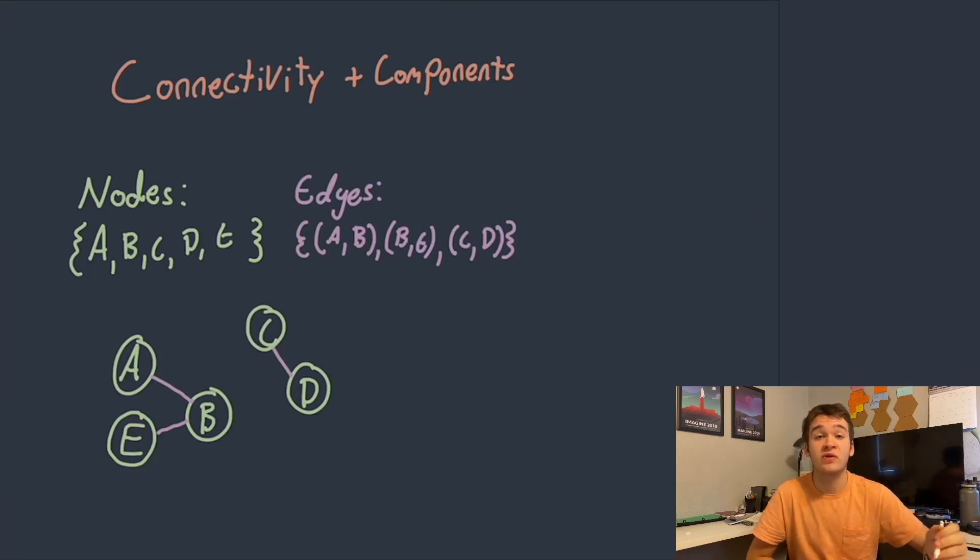So what components are are sort of distinct pieces of the graph that are not connected to the other pieces of the graph. So here for instance you can see this graph has two components, one containing A, B, and E and the other containing C and D.